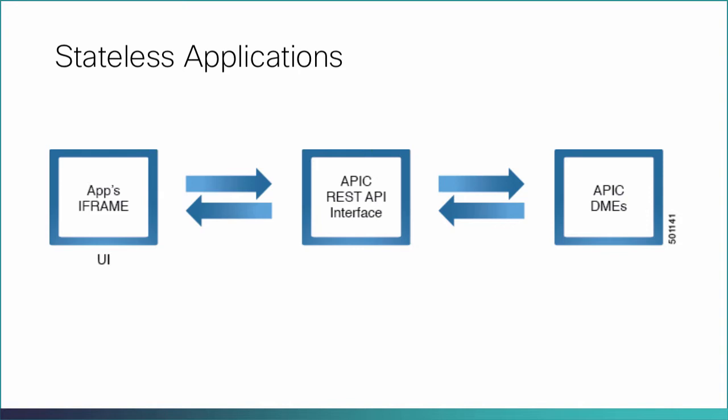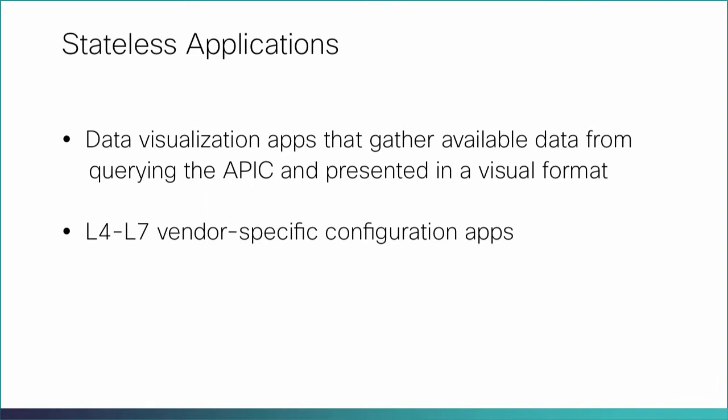Stateless apps are inserted in the APIC UI as an iframe. In this type of application, no app-specific state is stored in the APIC. The app queries Cisco APIC using its northbound REST APIs and retrieves information from the APIC. No state is maintained in the APIC between two invocations of the app. Common examples include data visualization apps and L4L7 vendor-specific configuration apps.